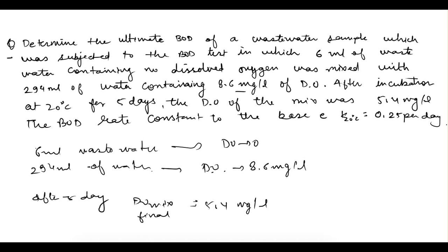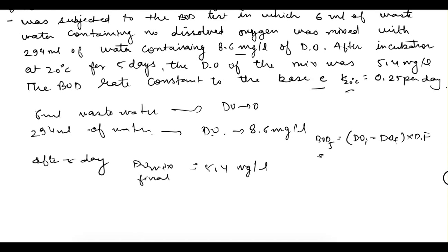Further we have been given the reaction rate constant at the base of E, that is 0.25 per day. For our calculation we need the initial DO of the mix. We need the final DO of the mix multiplied by the dilution factor. We have to find out the BOD for 5 days, and using this BOD5 and the reaction rate constant we can calculate the ultimate BOD.